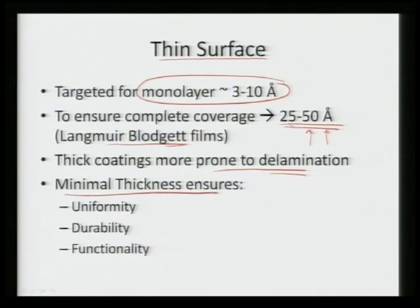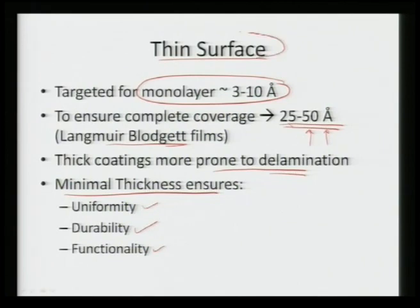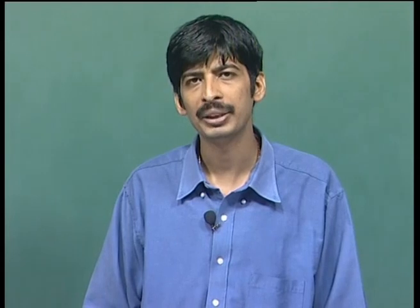Minimal thickness of these coatings ensures uniformity — they are nicely uniform, durable, and highly functional. Thin surfaces are basically targeted in the range of 3 to 10 Ångströms. To ensure complete coverage we might go for 25 to 50 Ångströms, but thicker coatings have problems of delamination or cracking. That is the reason we want to go for thin films, which ensure durability, uniformity, and good functionality of the surface.